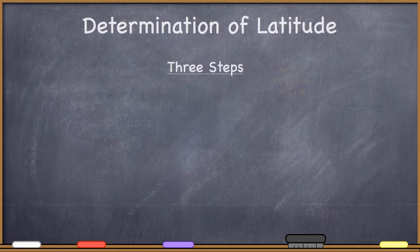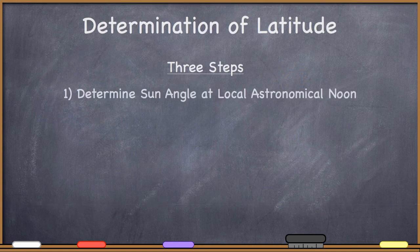So there are only three steps for the determination of latitude. The first is to determine the sun angle at local astronomical noon. You go outside when the sun is highest in the sky for you, take a protractor, and measure the angle between the horizon and the sun. Don't look directly at the sun, of course.